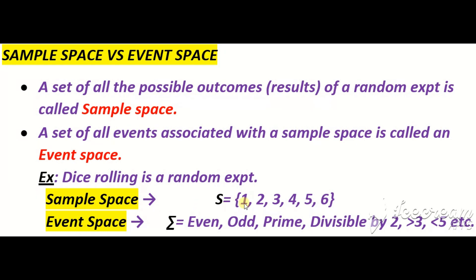اب اس sample space کے اندر آپ different events define کر سکتے ہیں۔ مثلاً even numbers کون سے ہیں، odd numbers کون سے ہیں، prime numbers کون سے ہیں، وہ کون سے numbers ہیں جو divisible by 2 ہیں، وہ کون سے numbers ہیں جو greater than 3 ہیں، یا less than 5 ہیں۔ ان تمام events کو collectively ہم event space کے نام سے جانتے ہیں۔